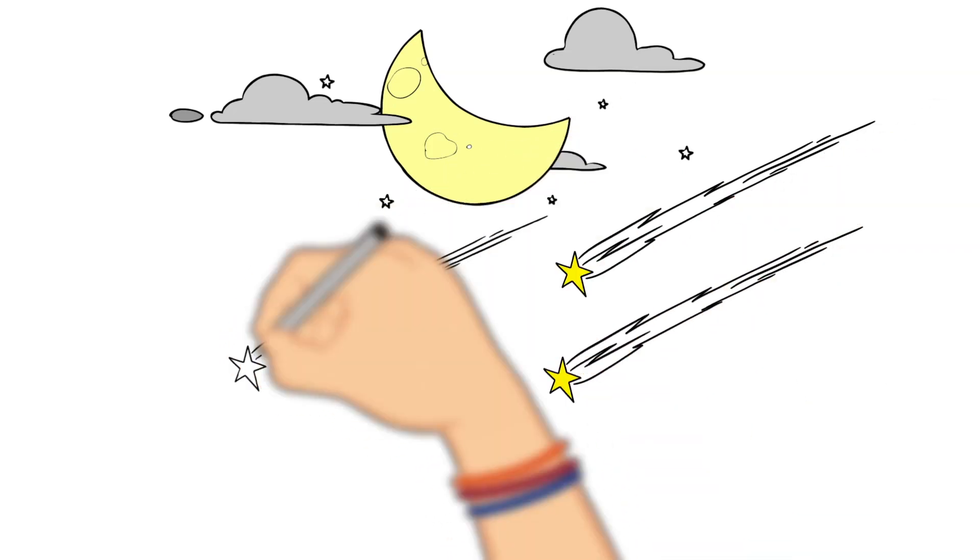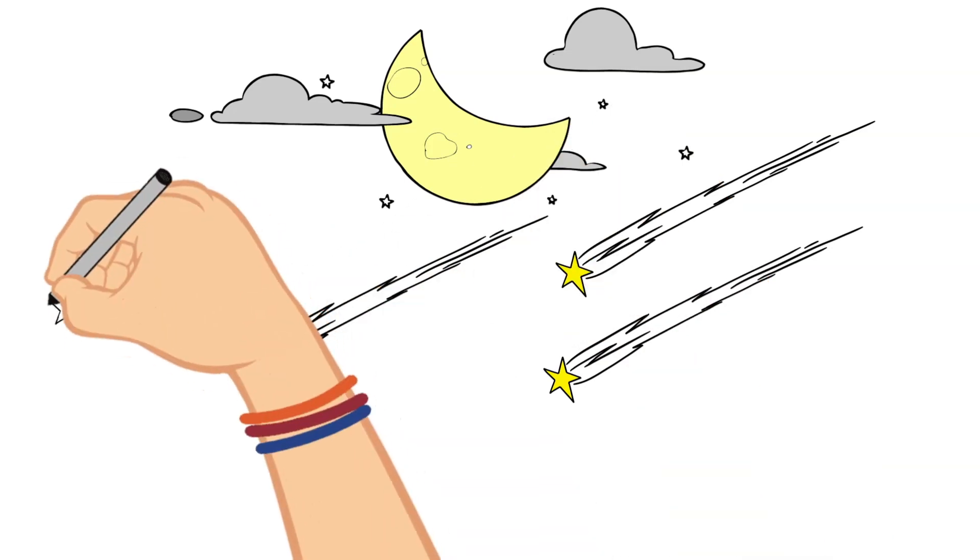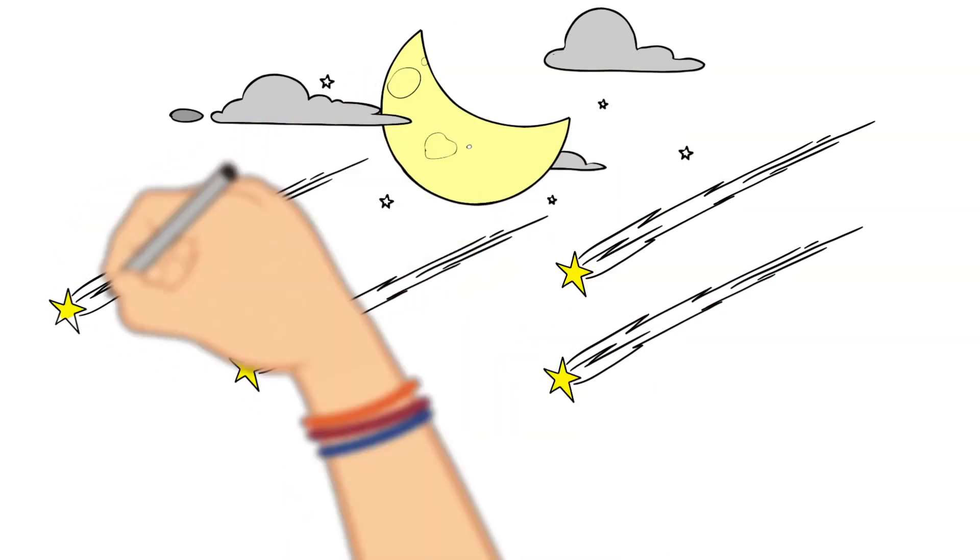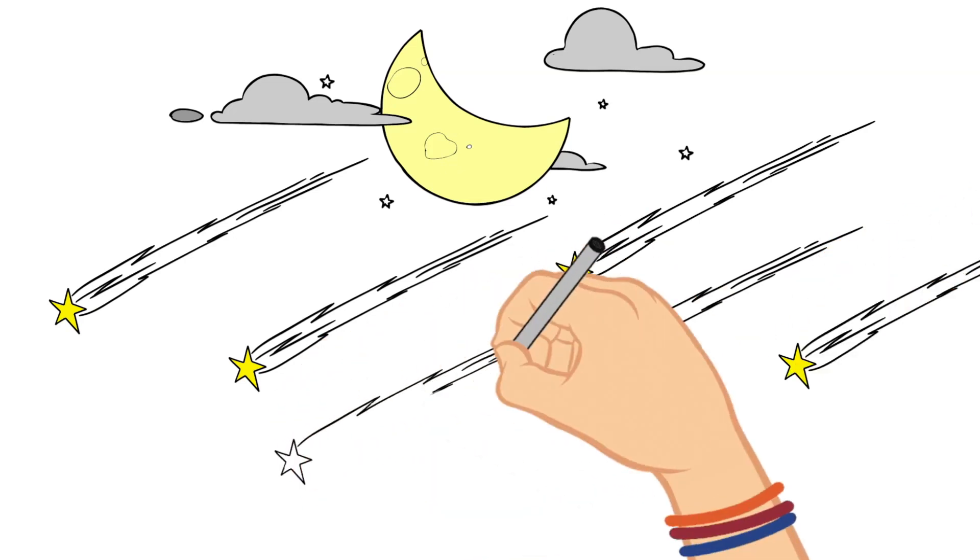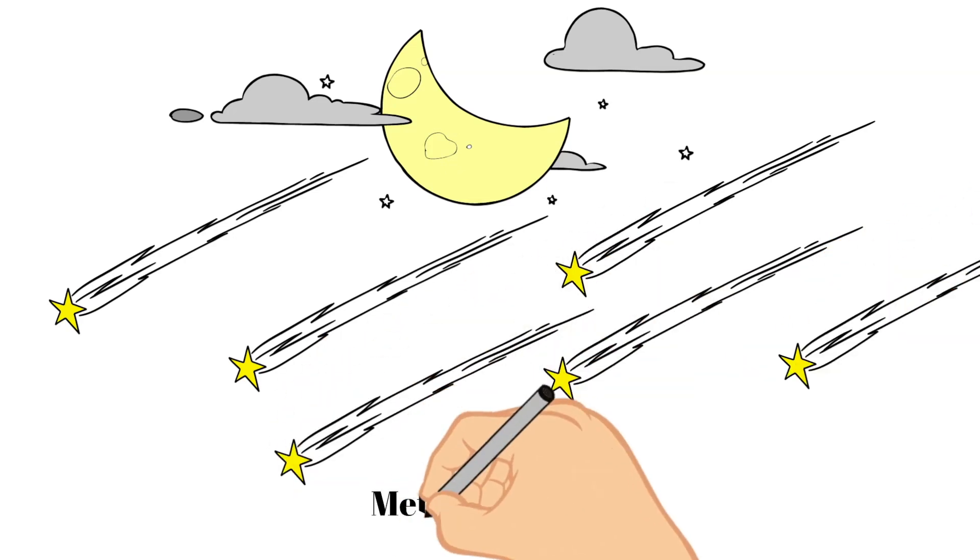Sometimes the number of shooting stars you can see per night increases greatly, and this is called a meteor shower. These occur every year regularly when the Earth passes through the trail of dusty debris left by a comet.